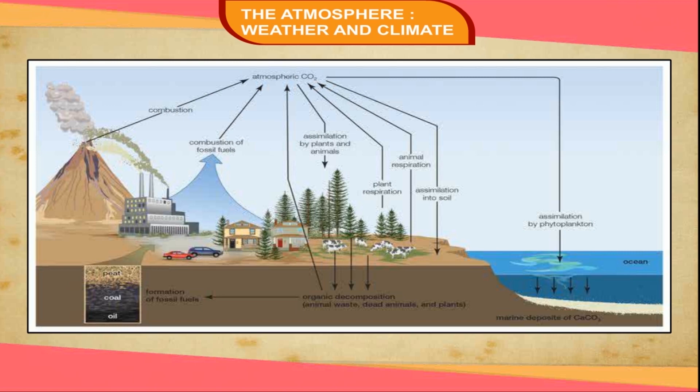Oxygen ranks as the second most plentiful gas in the atmosphere. It is essential for the survival of plants and animals. Living beings need oxygen to breathe and stay alive. Green plants produce oxygen during the process of photosynthesis. Carbon dioxide is used by the green plants for making food, so the carbon dioxide used during photosynthesis is replaced by the carbon dioxide released in respiration by organisms. Thus, nature has ways of maintaining a balance of gases in the atmosphere.